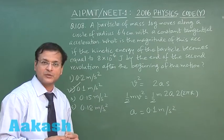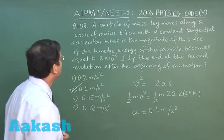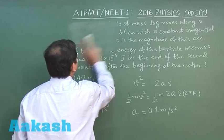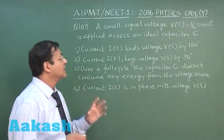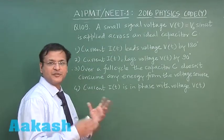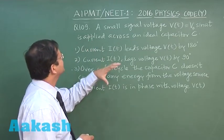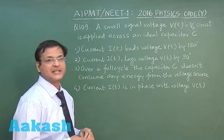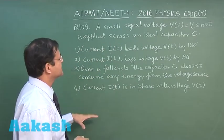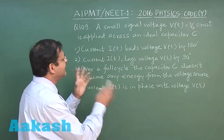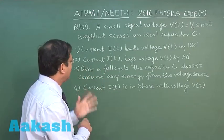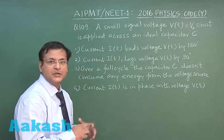Let us switch over to next question that is question 109. In this question which is a very simple and straightforward question, you have a small signal voltage applied across an ideal capacitor and then you have following options. In the option you can see they are talking about the leading lagging of voltage and current and they are talking about power consumption.